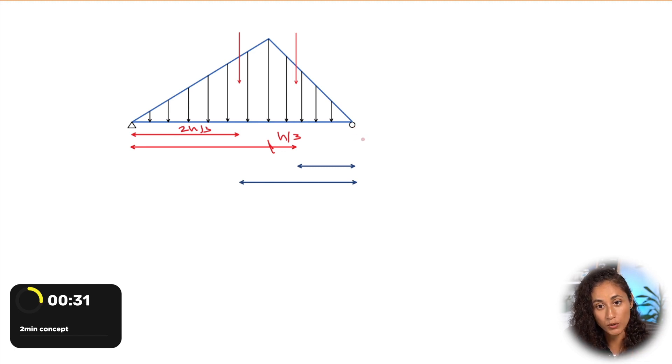Now if it's the other way, we're trying to find the reaction at the pin and we take the moment at the roller, then the centroids are going to change. So then for this force it's going to be 2h over 3, and then for this force it's going to be the distance from here all the way to here plus the centroid of this triangle, which is going to be h over 3.